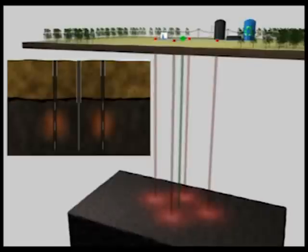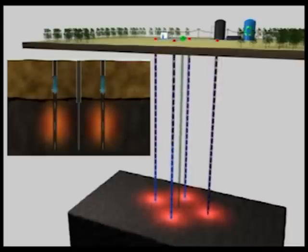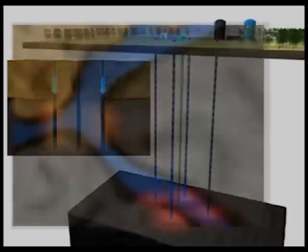System control software optimizes the delivery of current to each electrode. Electrical currents sent from the electrodes pass through the water in the reservoir, heating the bitumen.